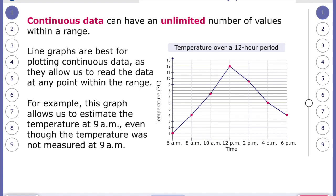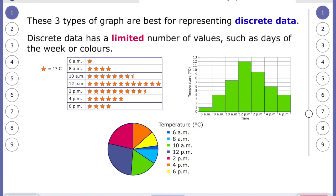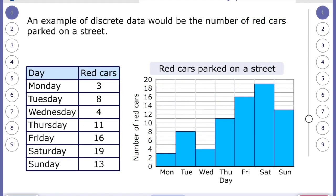By using the graph because it is continuous data we are looking at. So for example here this graph allows us to assume the temperature at 9am even though the temperature was not measured at 9am. These three types of graphs are best for representing something called discrete data. And that has limited numbers of values such as the days of week or colours. An example of discrete data would be the number of red cars parked on the street. So you can go out and you can count the cars on your street and that is discrete data.